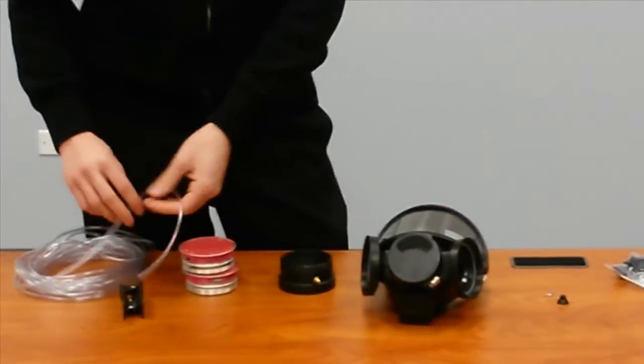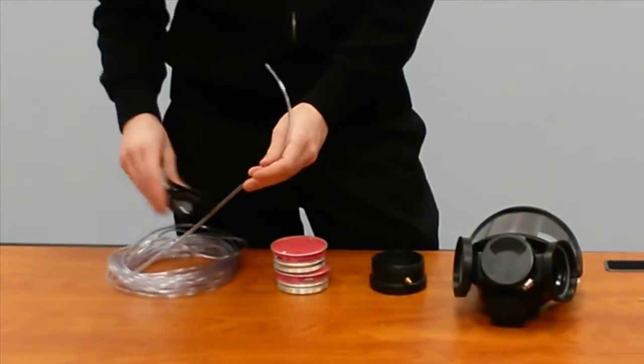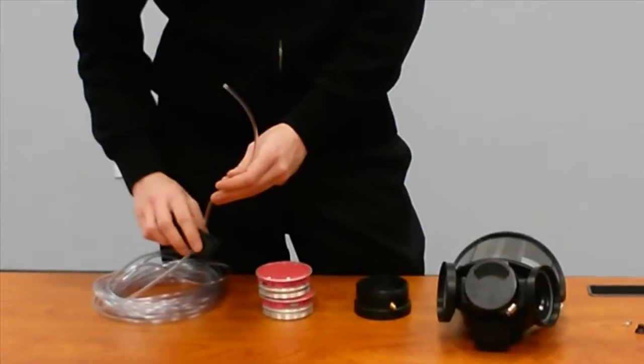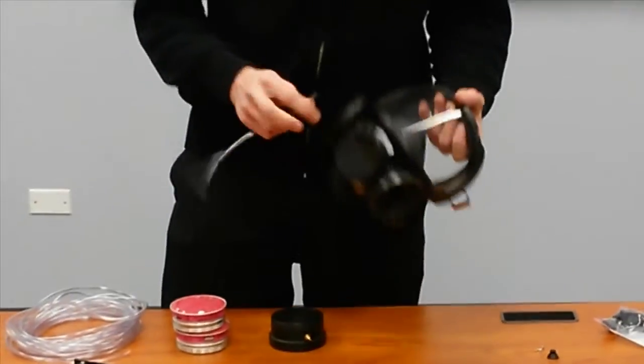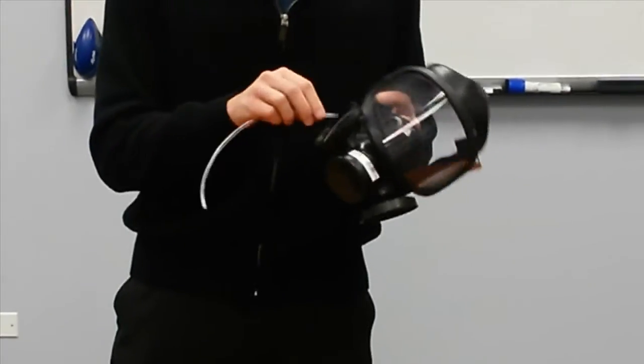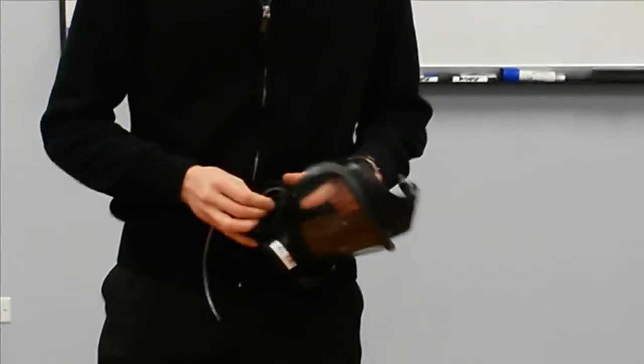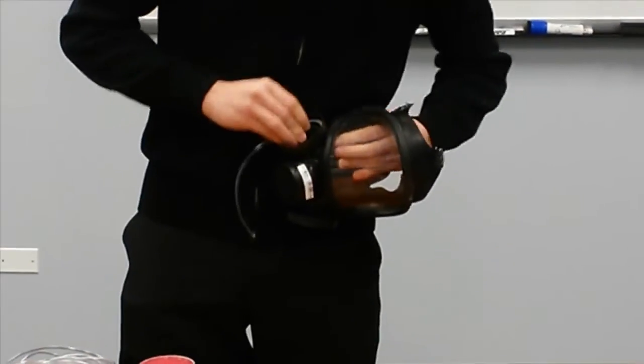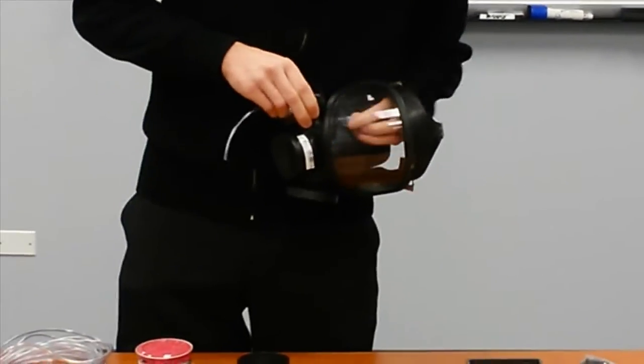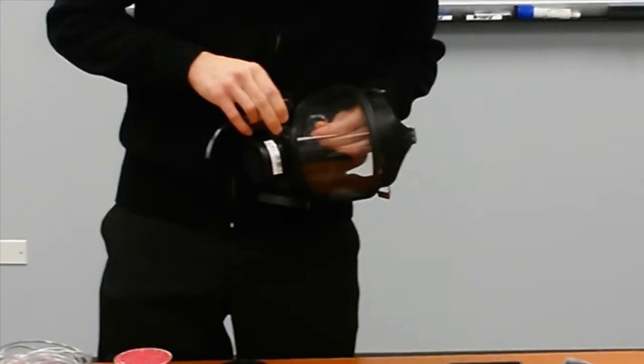You're going to want to cut a piece that's roughly six to eight inches in length. I cut mine a little bit longer just to make it easier to work with. We're going to run this through where the canister will attach to the respirator, and that's going to go up into the mask and through the valve.